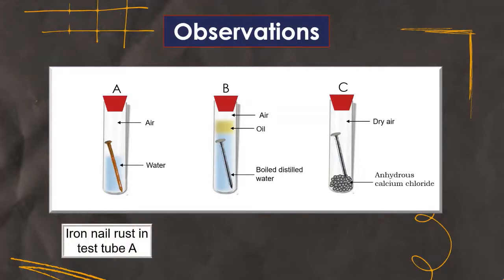Iron nail rusts in test tube A. In test tube A, the nail is exposed to both air and water.